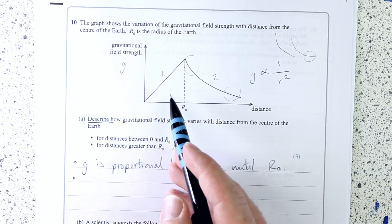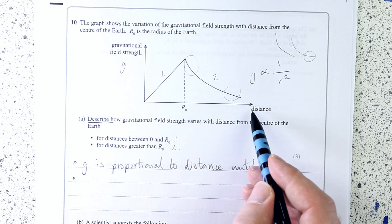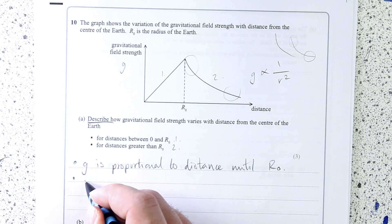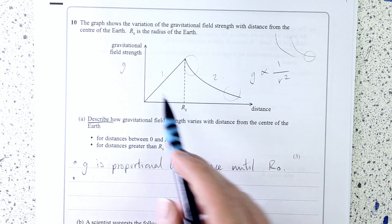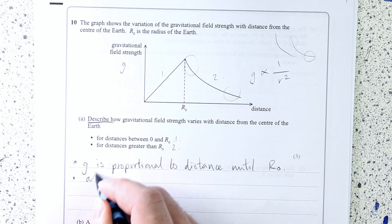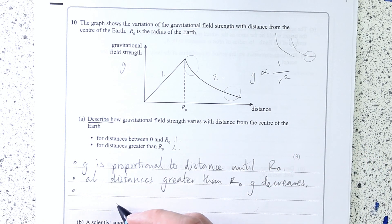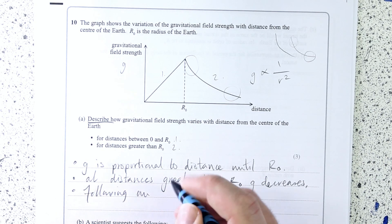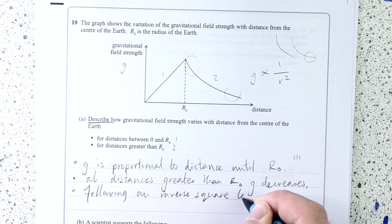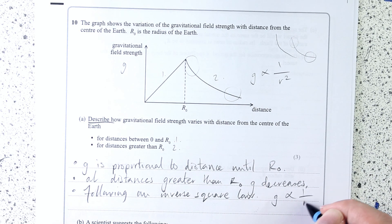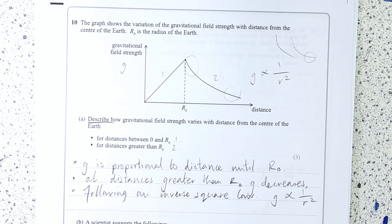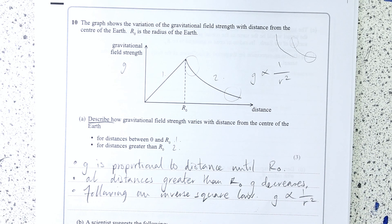Well, second mark in this first part is for saying, well actually, after R₀, the distance is greater than R₀, g decreases. The statement that g is proportional to 1 over R squared, or following an inverse square law, I would probably be satisfied with writing the algebra, but you might want to state that in words that gravitational field strength is proportional to 1 over the distance squared.